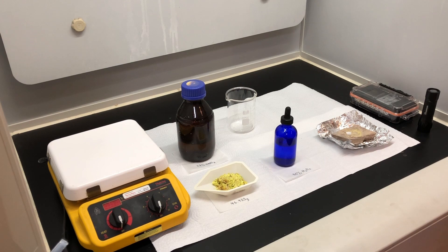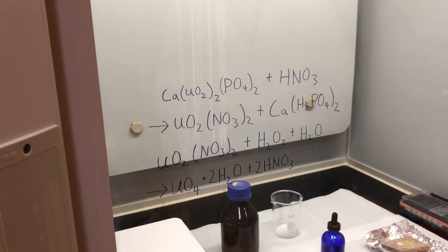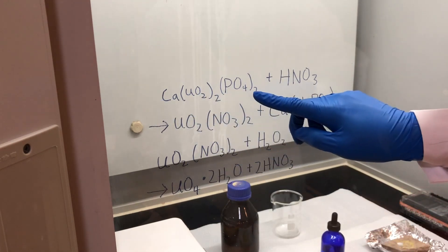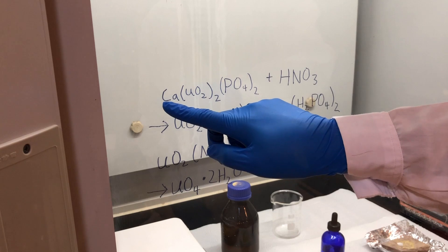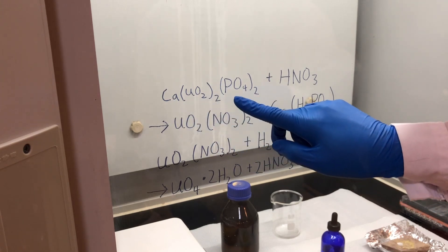I'll move on to show you the mechanism that we will be exploiting to extract the uranium out from the other elements as it currently exists in the ore. Naturally occurring autonite consists mainly of this chemical formula. As you can see, it contains calcium, uranium, as well as phosphate ions.